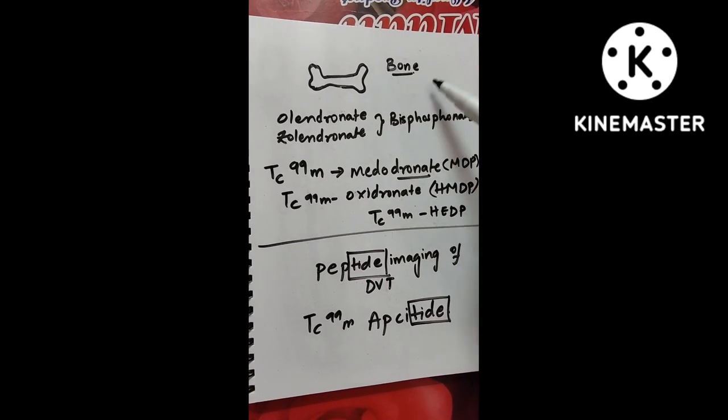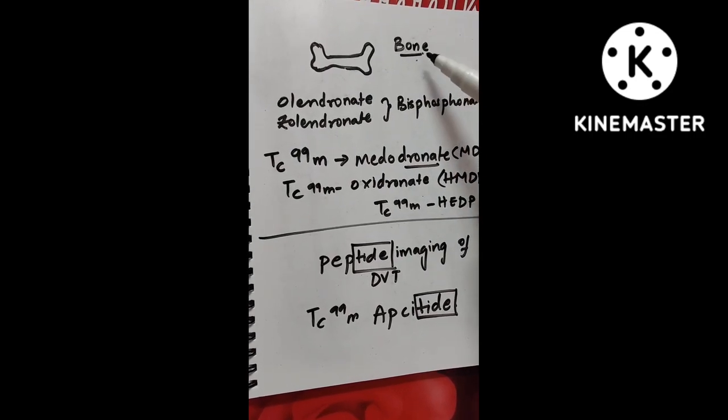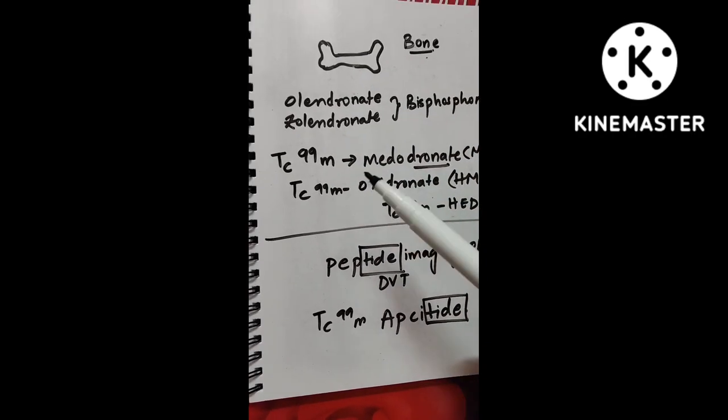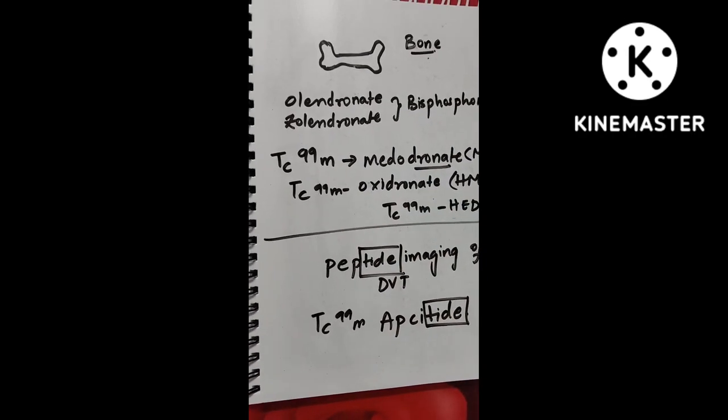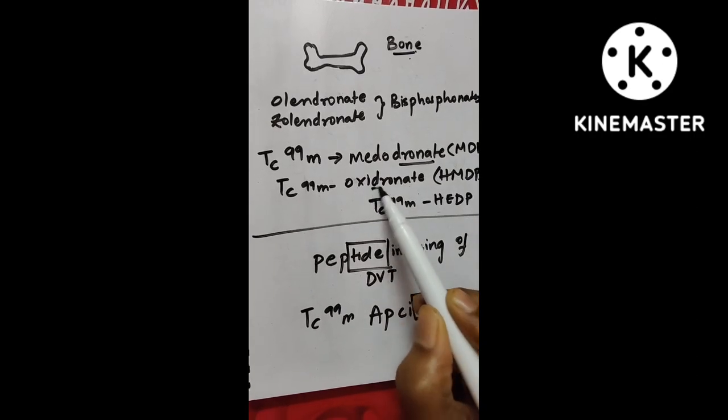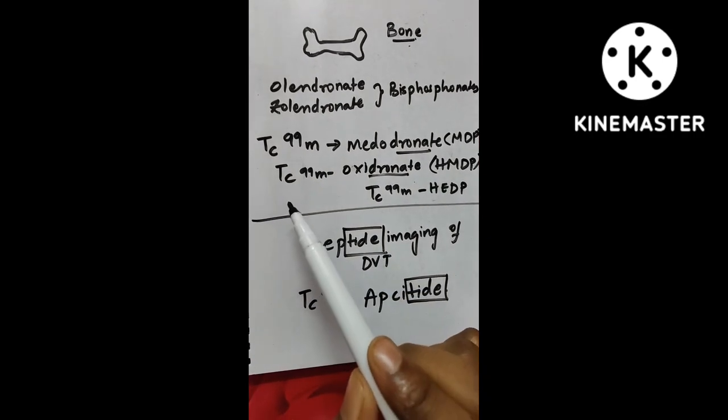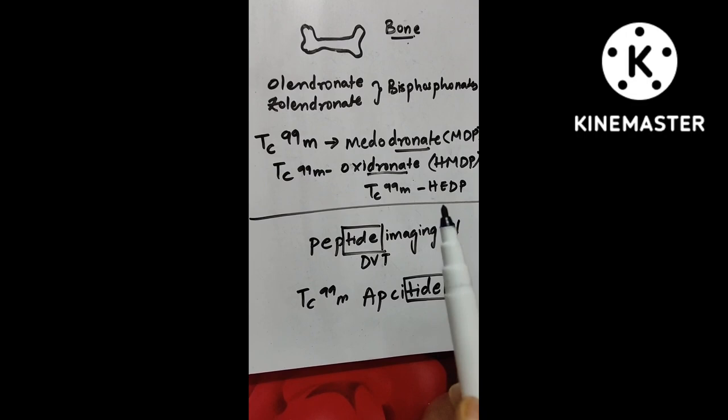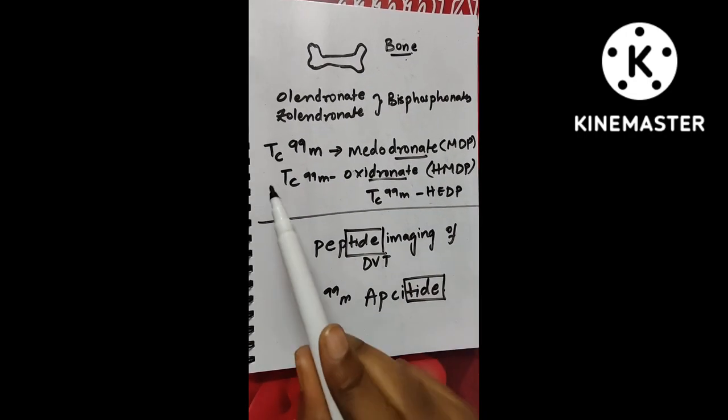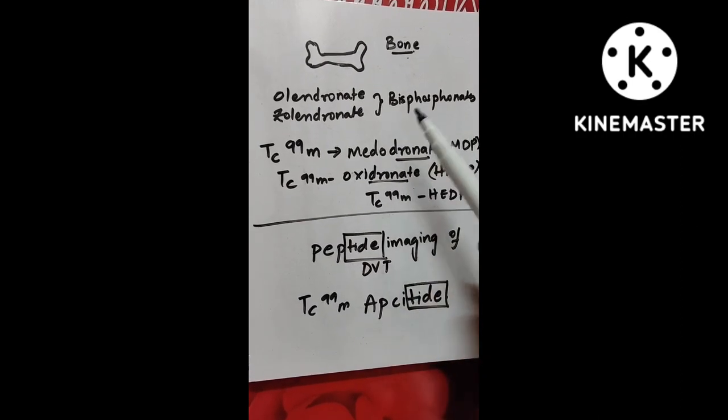So first thing that we learn here is bone. We use bisphosphonates for bone, right? Bisphosphonates names are like alendronate, zolendronate. So the scans that we use, the isotopes that we use here also have dronate in their name. So oxydronate, medodronate, everything that I discuss here are about technetium-99M only. Only one thing is there with gallium. So let us learn that thing at the last. So everything now comes with technetium-99M, medodronate and oxydronate. This is for bone.